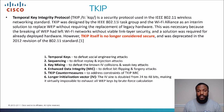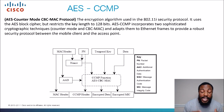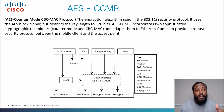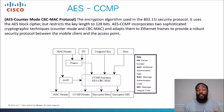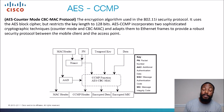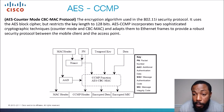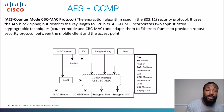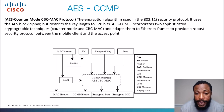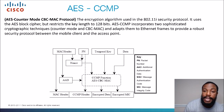Now AES can be broken down into two types of protocols. The first is AES CCMP, or AES Counter Mode CBC-MAC Protocol. This encryption algorithm was used in the 802.11i security protocol and uses the AES block cipher, restricting the key length to 128 bits. AES CCMP incorporates two sophisticated cryptographic techniques — counter mode and CBC-MAC — and adapts them to Ethernet frames to provide robust security between a mobile client and access point.